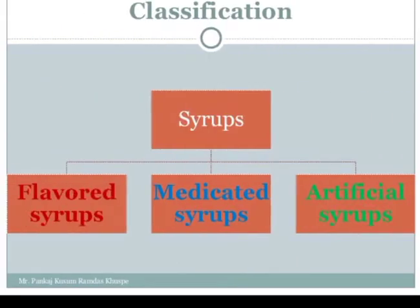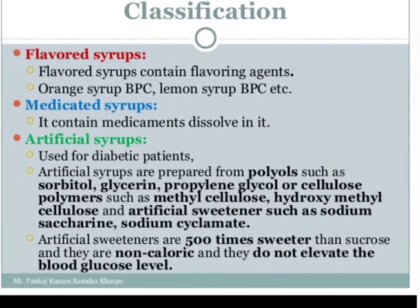Classification of syrup: syrup is classified into three types. First is flavored syrup, second is medicated syrup, and third is artificial syrup.